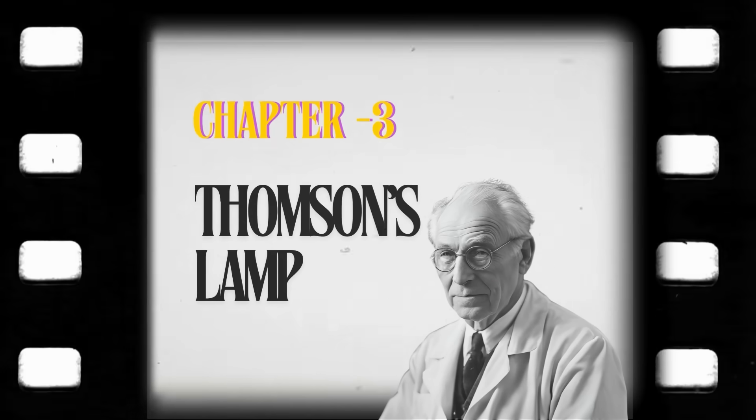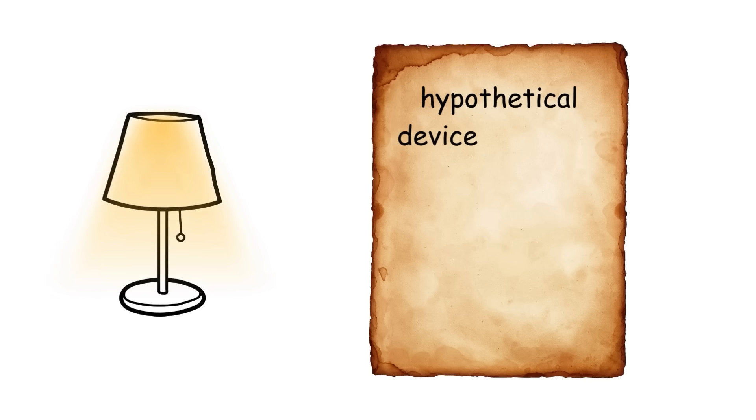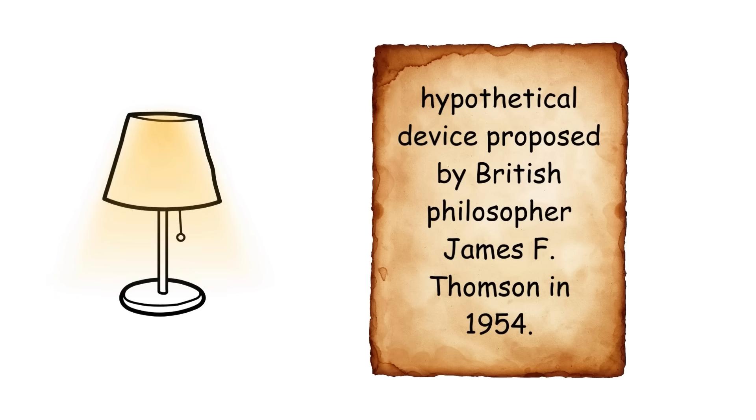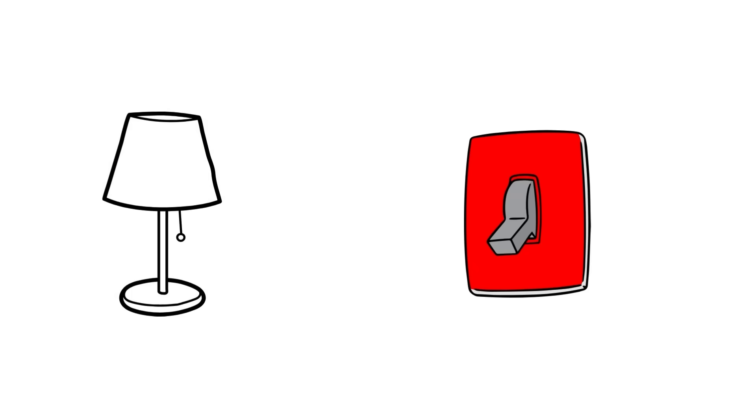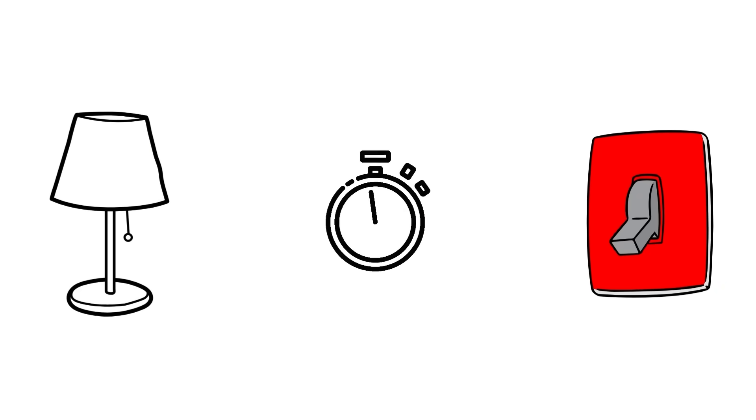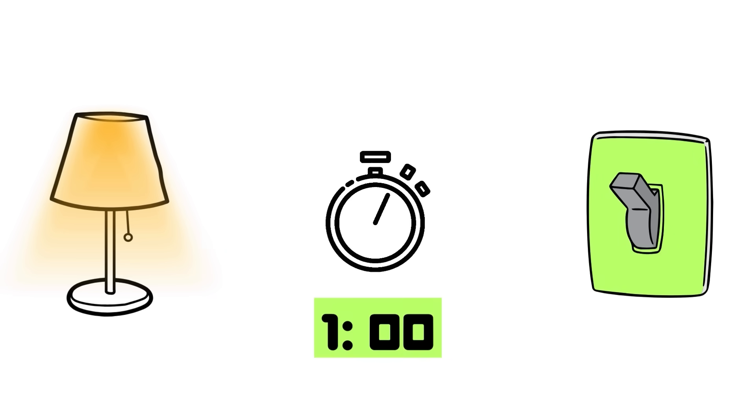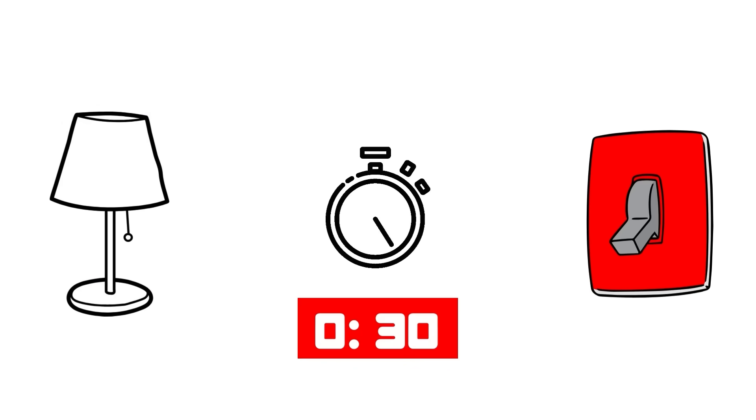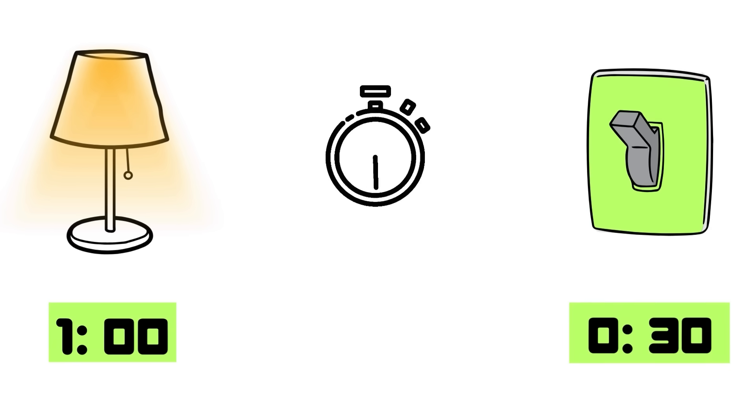Thompson's Lamp is a hypothetical device proposed by British philosopher James F. Thompson in 1954. It is a lamp that can be switched on and off as fast as you want. Let's say that you start a timer and turn the lamp on. You wait one minute, and then you turn the lamp off again. After another half a minute has passed, you turn the lamp back on. Each time you wait for half of the previous amount of time, and then you toggle the lamp.